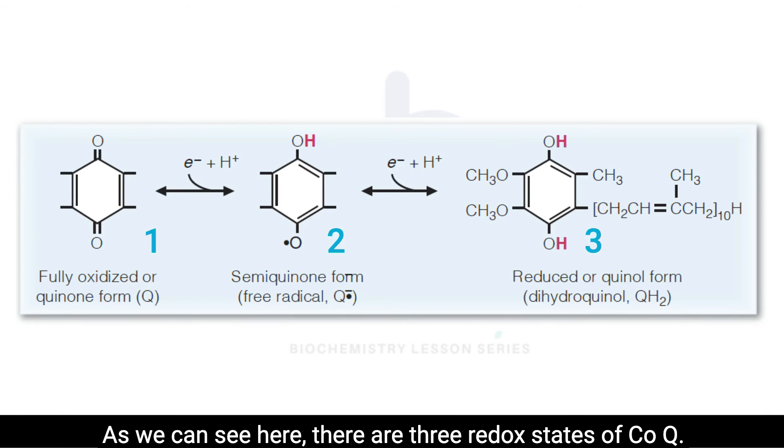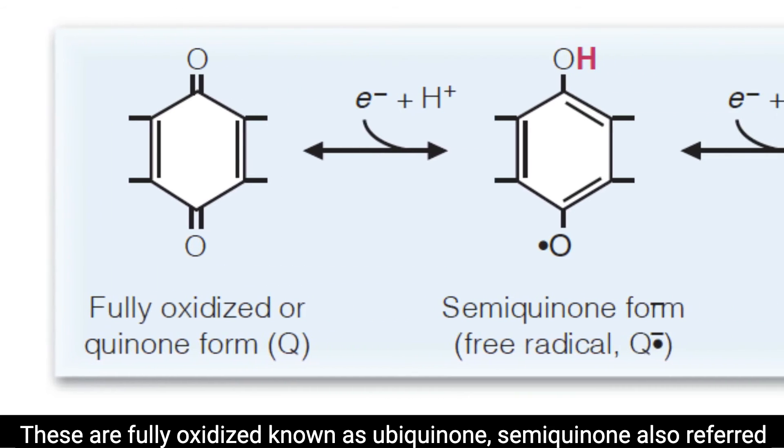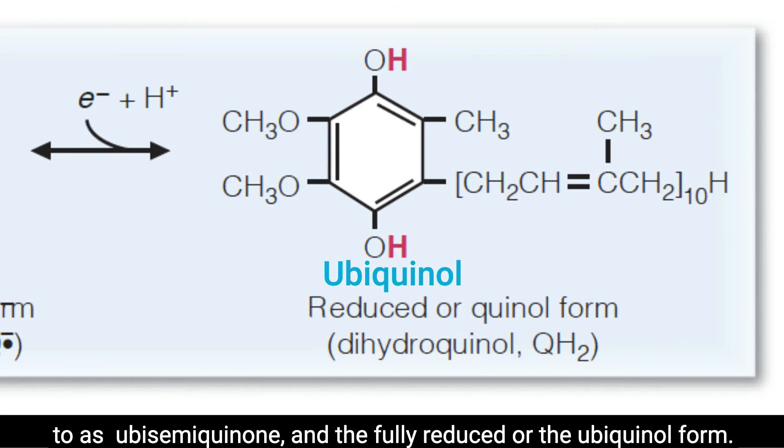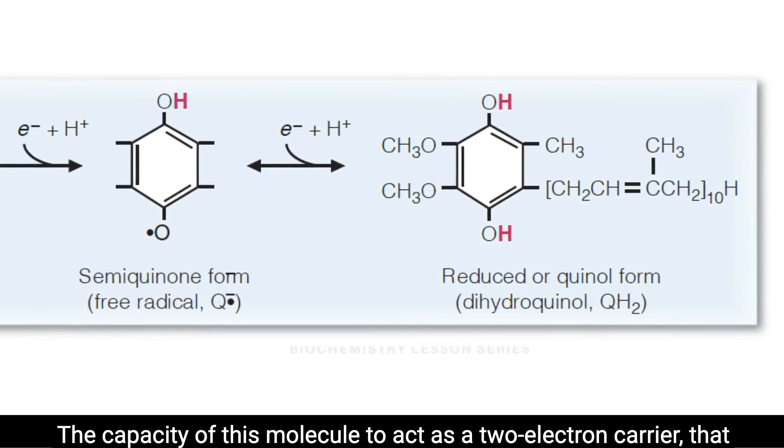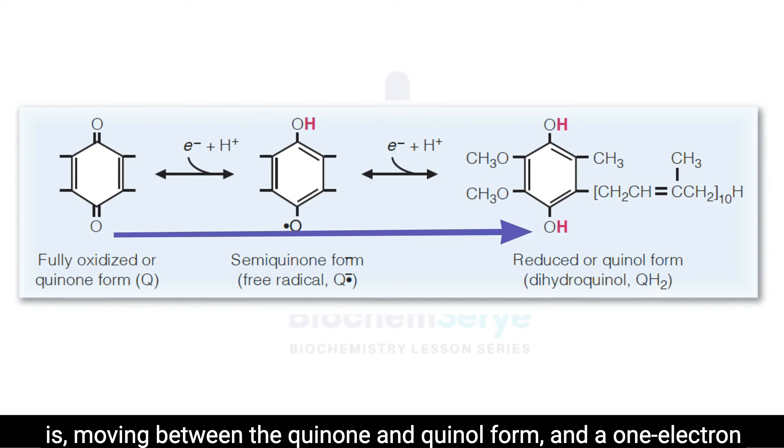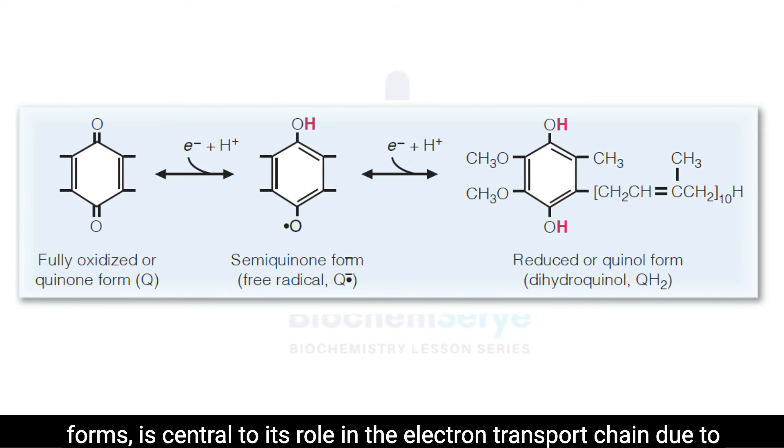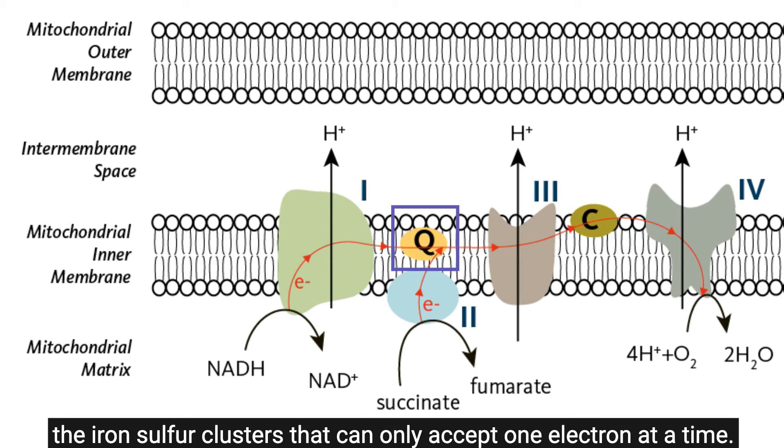As we can see here, there are 3 redox states of CoQ. These are fully oxidized, known as ubiquinone; semiquinone also referred to as ubisemiquinone; and the fully reduced ubiquinol form. The capacity of this molecule to act as a 2-electron carrier, moving between the quinone and quinol form, and a 1-electron carrier, moving between the semiquinone and one of these other forms, is central to its role in the electron transport chain due to the iron-sulfur clusters that can only accept one electron at a time.